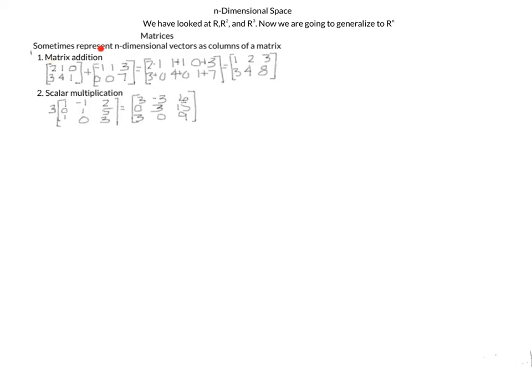To add matrices, you just add component by component. The first row, first column entry gets added to the first row, first column — so that's the 2 and the minus 1. The first row, second column gets added to the first row, second column — that's 1 plus 1. Then I add my 0 and 3, my 3 and 0, my 4 and 0, and my 1 and 7, and this is my resulting matrix.